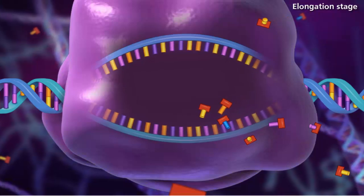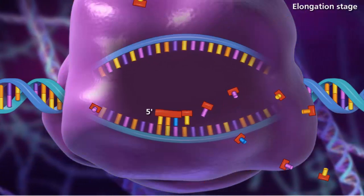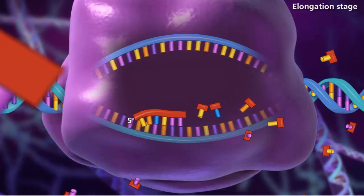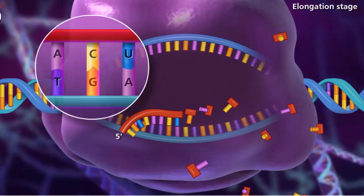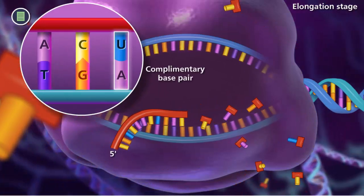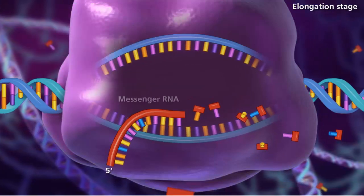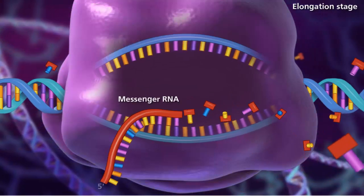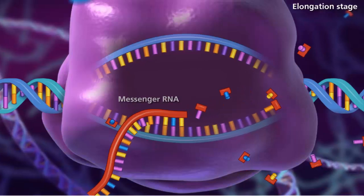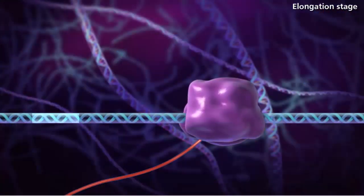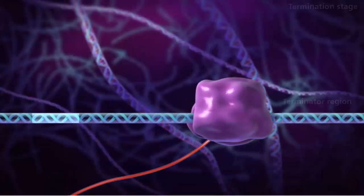Then during elongation, the RNA polymerase slides along the template DNA strand. As the complementary bases pair up, the RNA polymerase links nucleotides to the three prime end of the growing RNA molecule. Once the RNA polymerase reaches the terminator portion of the gene, the messenger RNA transcript is complete.